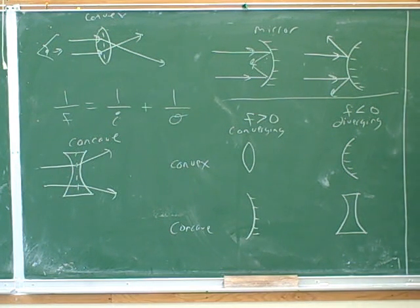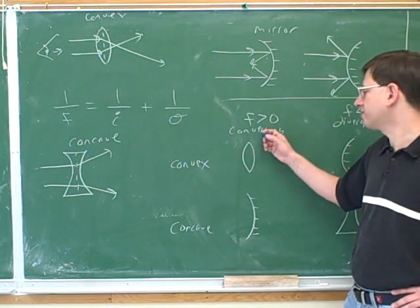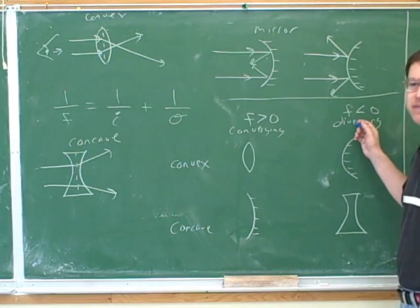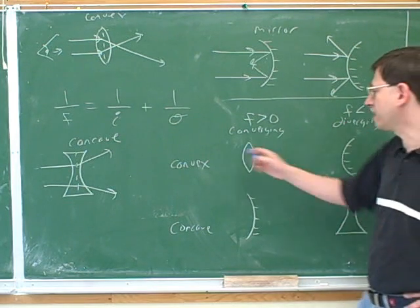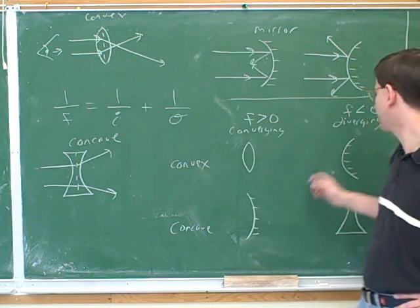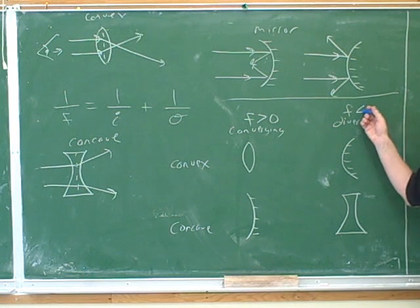Now, one thing that this table demonstrates is that the terms convex and concave are not very useful. The reason they're not useful is notice that a convex lens is converging, but a convex mirror is diverging. It gives you two different results. A convex lens has a positive focal length, but a convex mirror has a negative focal length.